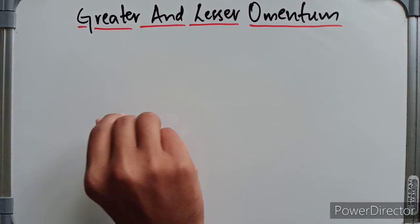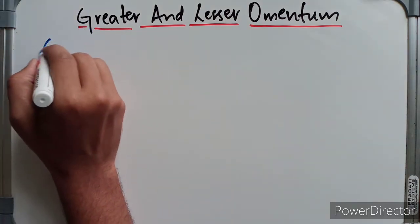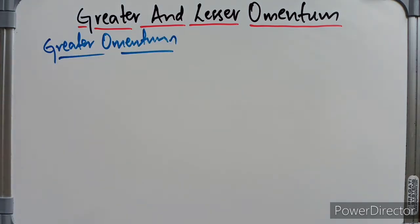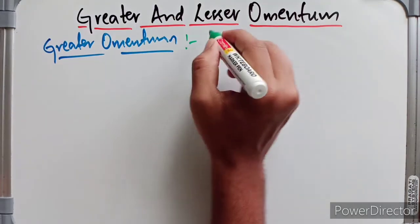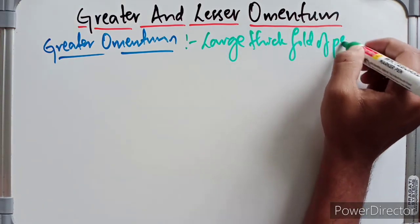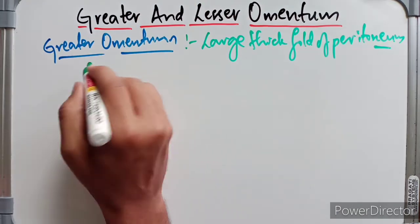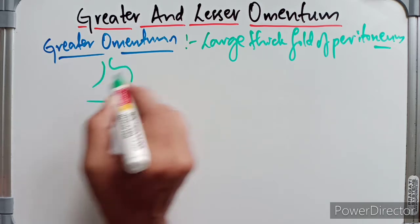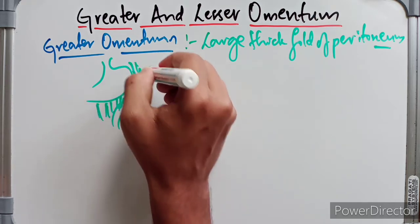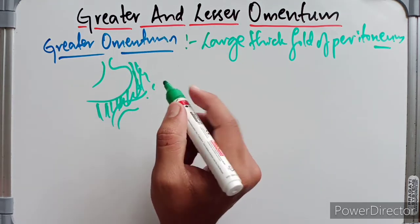Hello guys, welcome to my video. In this video we are going to discuss the anatomy of the greater omentum and lesser omentum. So let's begin with the greater omentum. The greater omentum is a large, thick fold of the peritoneum. It hangs from the greater curvature of the stomach to the adjacent part of the duodenum, like an apron, and it also covers the loops of the intestine.